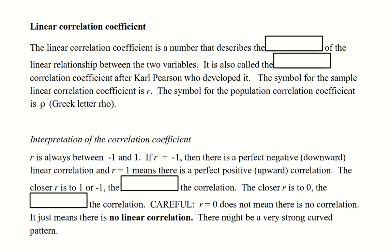The linear correlation coefficient is a number that describes the strength of the linear relationship between the two variables. It's also called the Pearson correlation coefficient after Carl Pearson, who developed it. The symbol for the sample linear correlation coefficient is r. The symbol for the population correlation coefficient is rho.